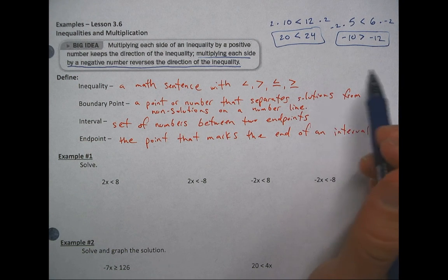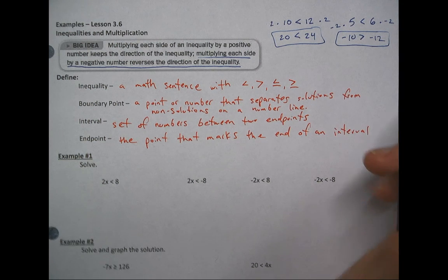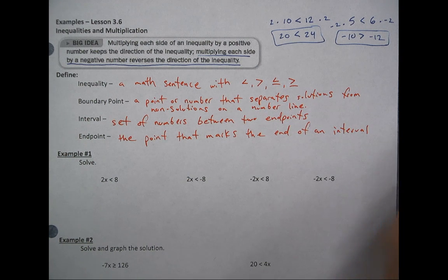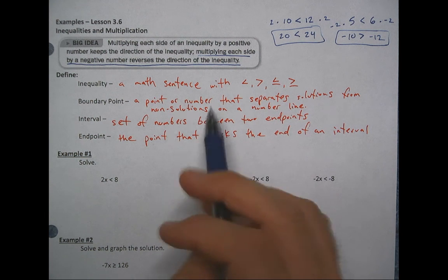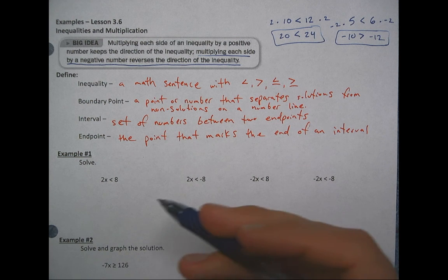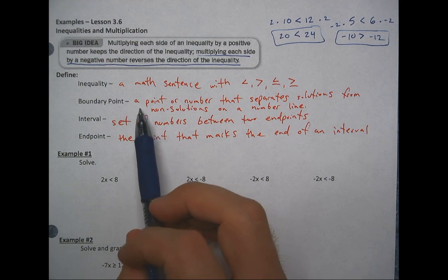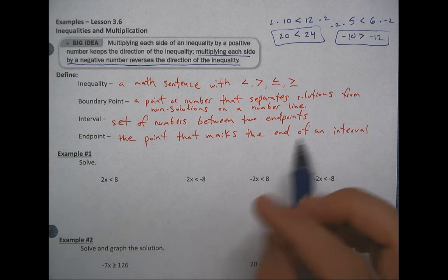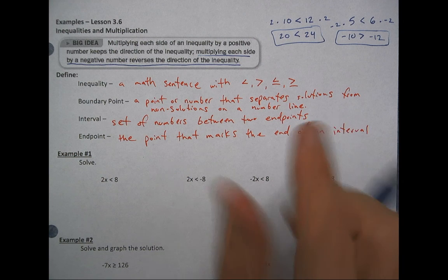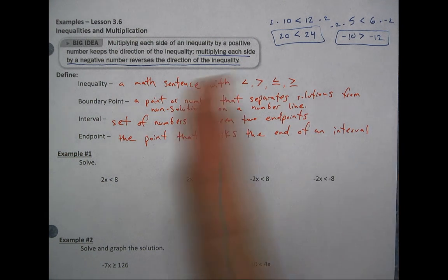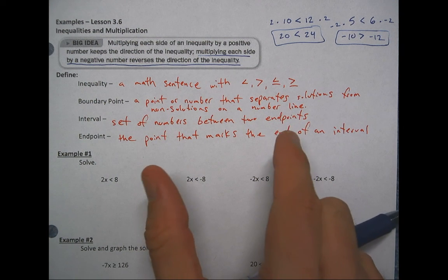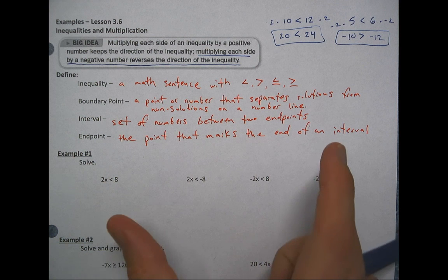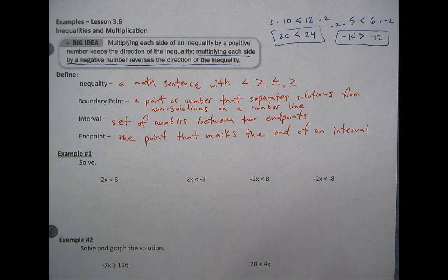We're going to apply that to some algebra and solve inequalities. An inequality is your math sentence with less than, greater than, less than or equal to, or greater than or equal to. We're talking about boundary points — the point that separates solutions from non-solutions. An interval is a set of numbers between two endpoints, like everything from two to five. An endpoint is where the solution set starts or stops.